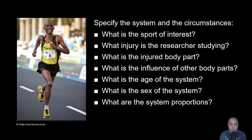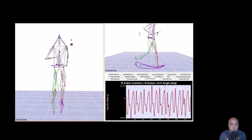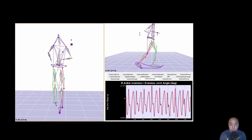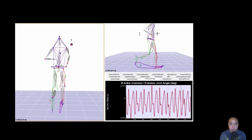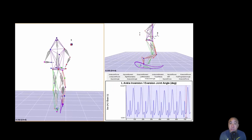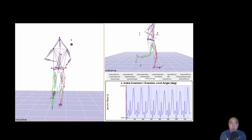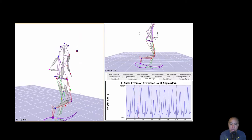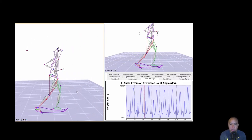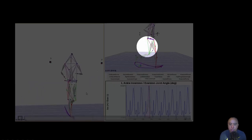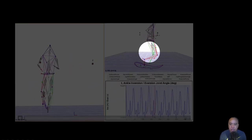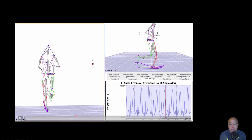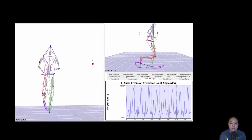We also need to know the age and sex of the system, as well as the anthropometric properties of the system. When a runner comes in for biomechanical analysis — as shown here — if we're interested in shin splints or tibial stress fractures, we may look at overpronation or supination. This involves looking at inversion and eversion of the subtalar joint as well as plantar and dorsiflexion at the talocrural joint. Any one of those cases can be classified as a system.